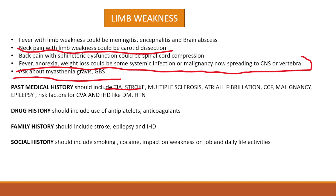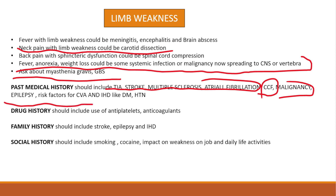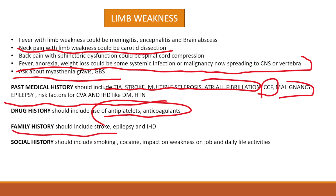In the past medical history, we will ask about TIA, stroke, multiple sclerosis, atrial fibrillation — which predisposes to ischemic stroke — congestive cardiac failure, malignancy that can metastasize to the brain causing weakness, epilepsy, and risk factors for cardiovascular and ischemic heart disease like diabetes and hypertension. In drug history, we will ask about antiplatelet and anticoagulant medications, as they can lead to bleeding inside the brain causing weakness. Family history is important in the context of stroke, epilepsy, and ischemic heart disease.